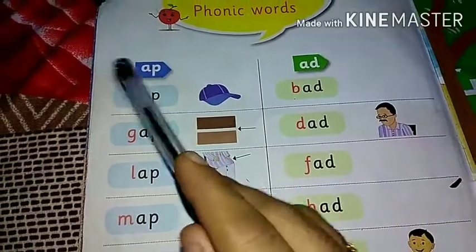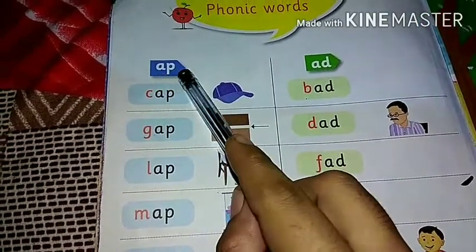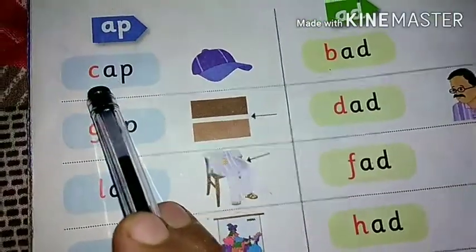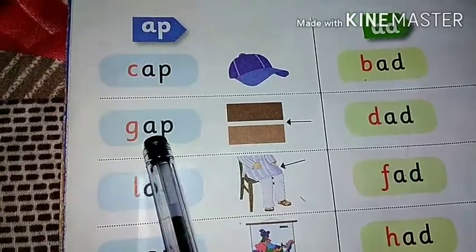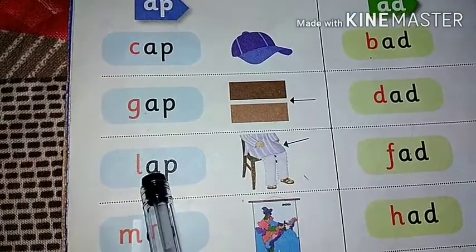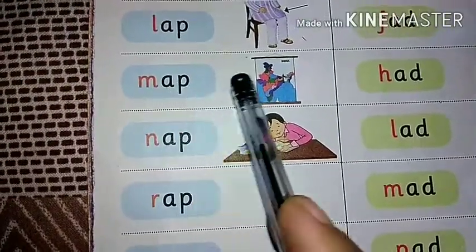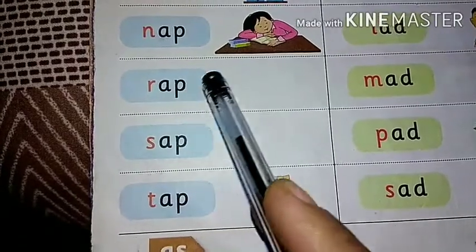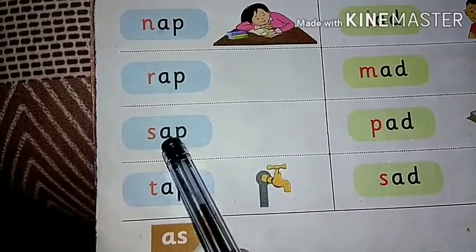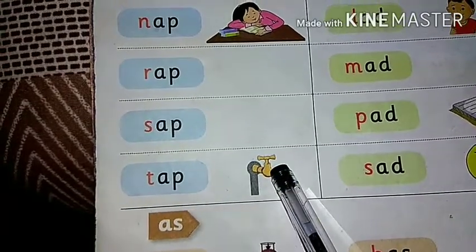Now we are going to see -ap words. K-ap — cap. G-ap — gap. L-ap — lap. M-ap — map. N-ap — nap. R-ap — rap. S-ap — sap. T-ap — tap.